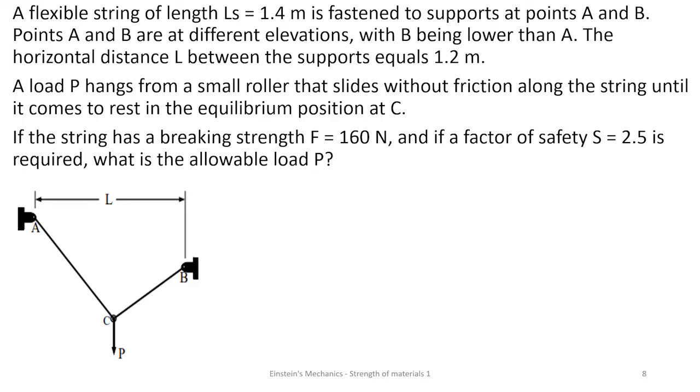A flexible string of length LS equals 1.4 meters is fastened to supports at points A and B. From the diagram, you can see that we have points A and B. This is the string from A all the way to B which is attached to that support.